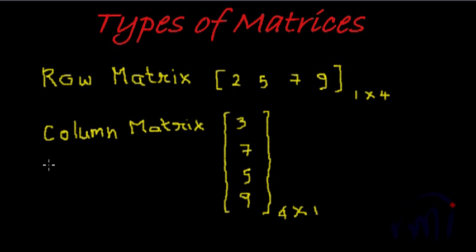The first matrix type is a row matrix. As the name suggests, a row matrix has only a single row of elements. It can have as many columns as possible. In the given example, we have a single row and four columns.